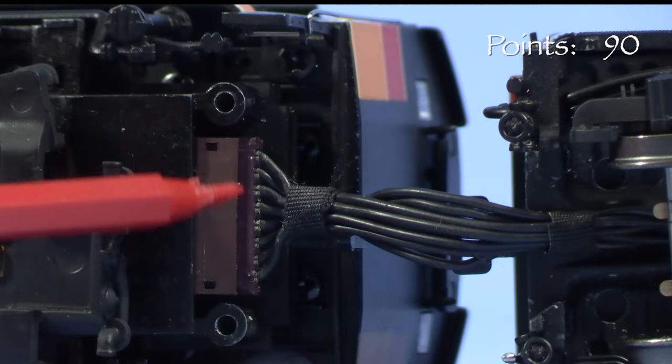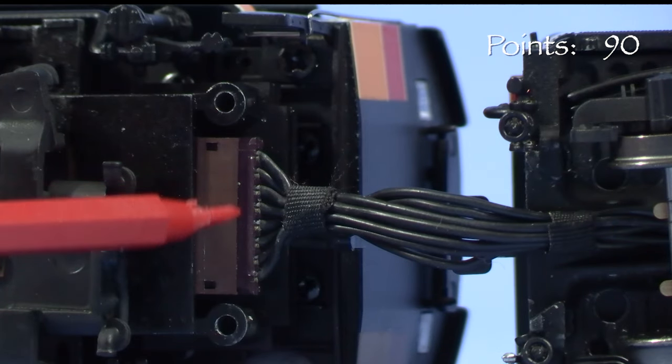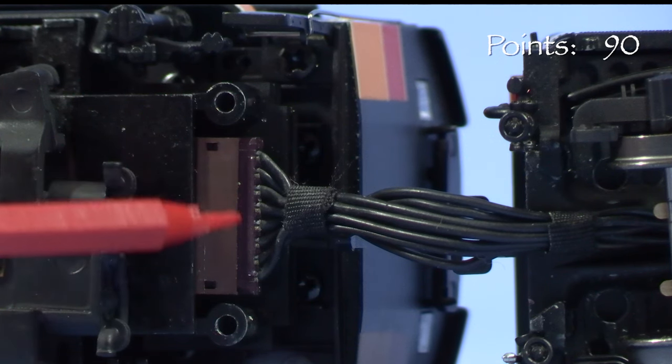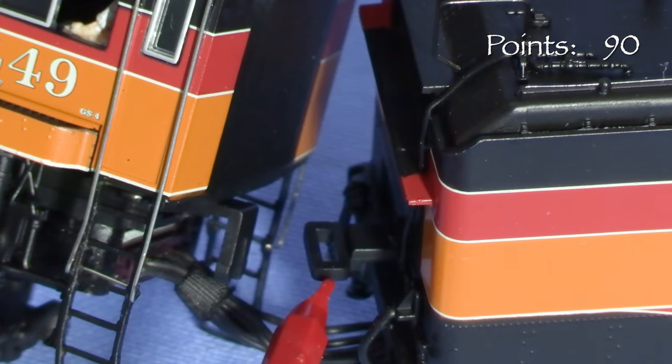The engine and tender are connected by an electrical cable and a drawbar. There's a plug under the cab that should allow the cable from the tender to be unplugged, but it's very tight on my model so I decided not to mess with it. The drawbar is a very simple tab and slot arrangement.